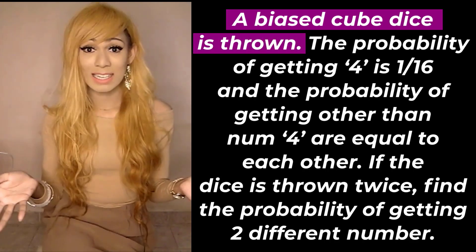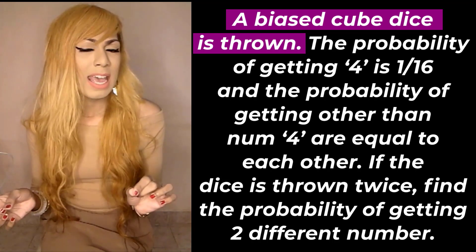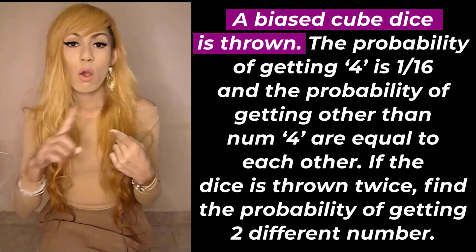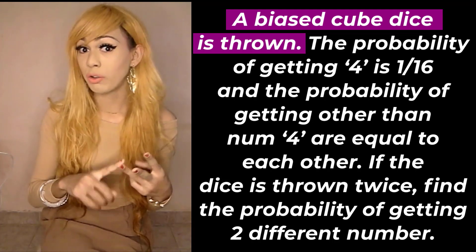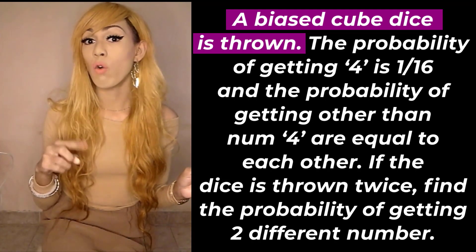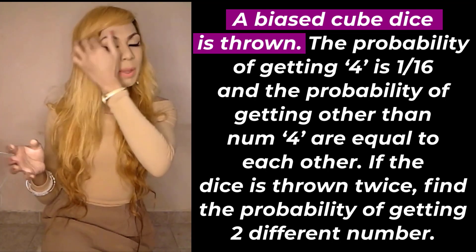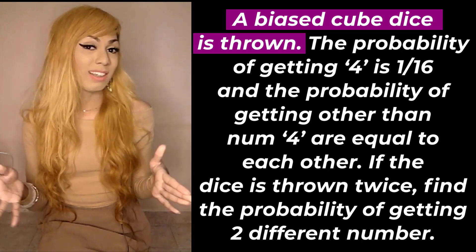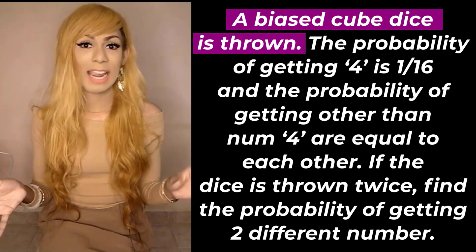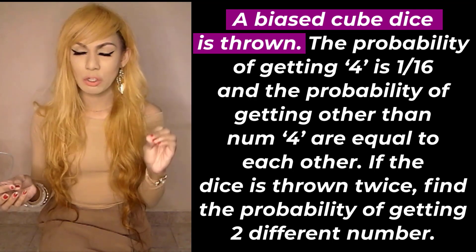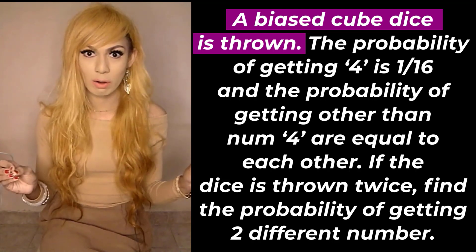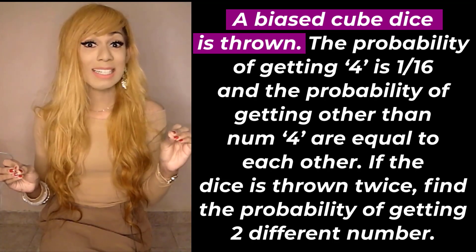If it is fair, then the probability of getting one, two, three, four, five, or six would each be one over six, because we have six flat faces on a dice. But that is not the case here — this is not a fair dice, so it's not going to be one over six.